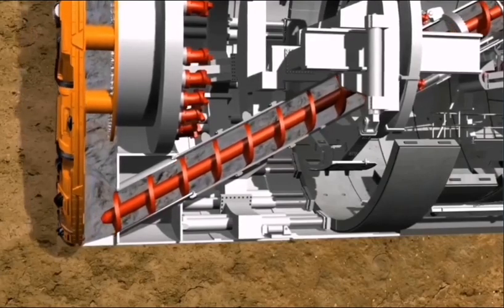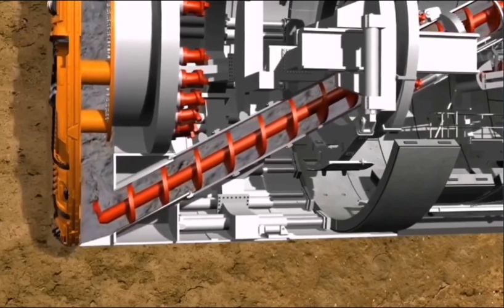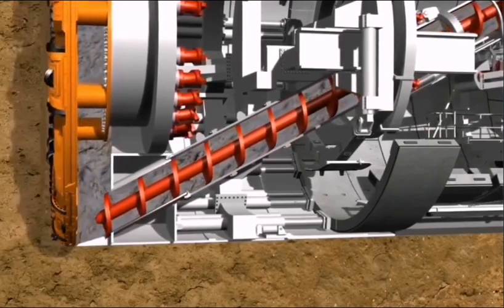The soil prepared in this way can now be transported from the invert area of the excavation chamber to a belt conveyor by a screw conveyor.